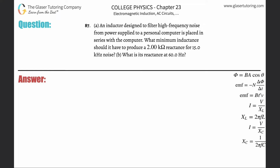Number 87, letter A. An inductor is designed to filter high-frequency noise from a power supply to a personal computer. It is placed in series with the computer. What minimum inductance should it have to produce a 2 kilo-ohm reactance for 15 kilohertz noise? Let's write down what we know — we want to find the minimum inductance L. The inductive reactance is 2 kilo-ohms.